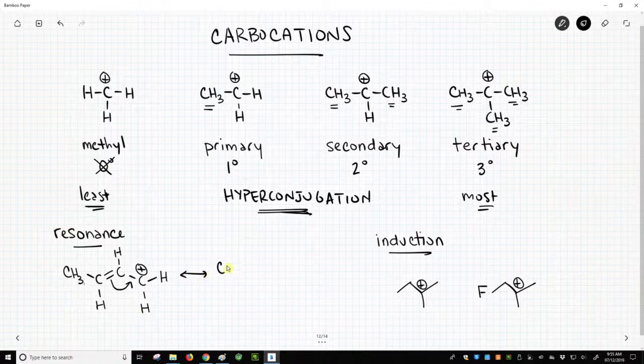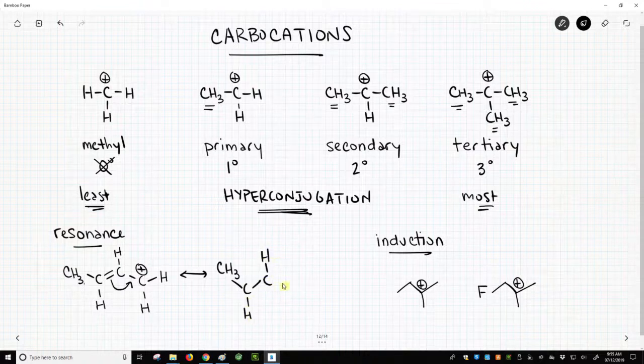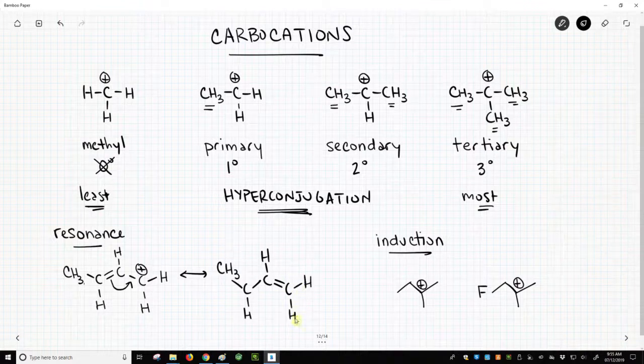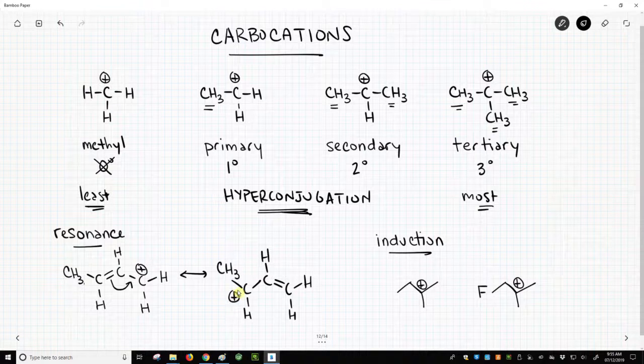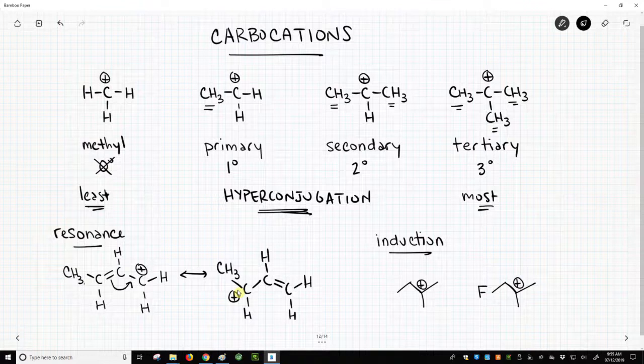And if we follow those arrows, we'll have a double bond on the right-hand side. This double bond is now gone. That leaves this carbon short of electrons. It has a positive charge. And then we can draw a resonance form. We have delocalized that charge between the two carbons.